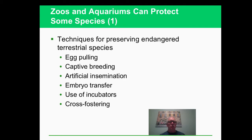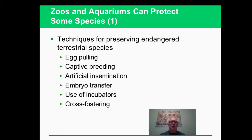Captive breeding is a good one to think of - the California condor is a case study. These are things we can do to keep species going: raise them in captivity, then release them into the wild when they're able. We've been making a lot of efforts in this area. It's costly, and a lot of it is trial and error trying to figure out how it can be done.